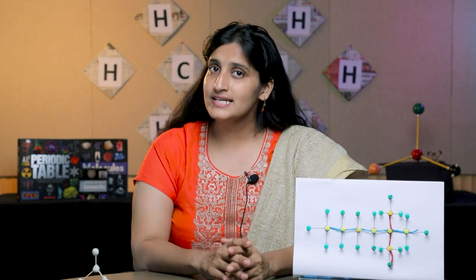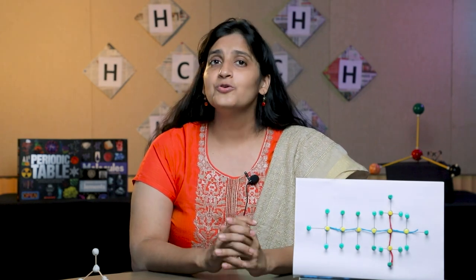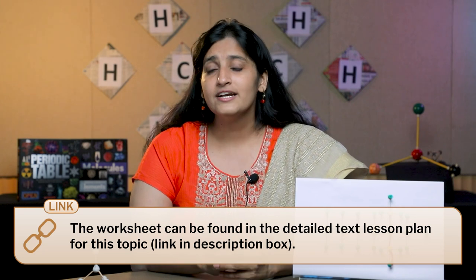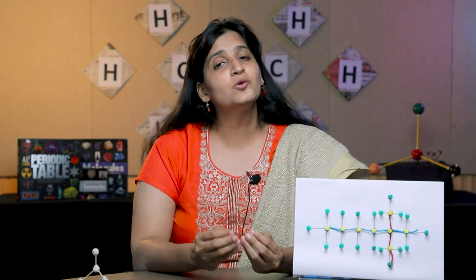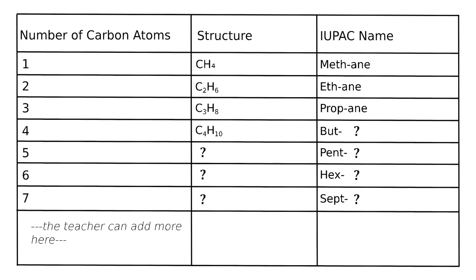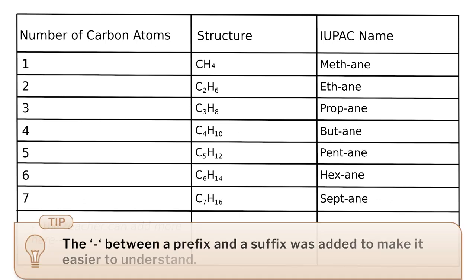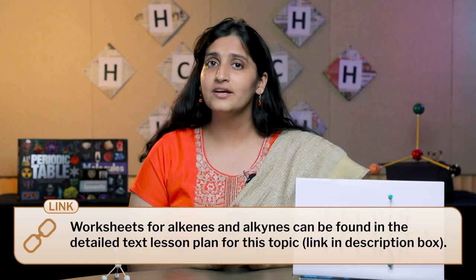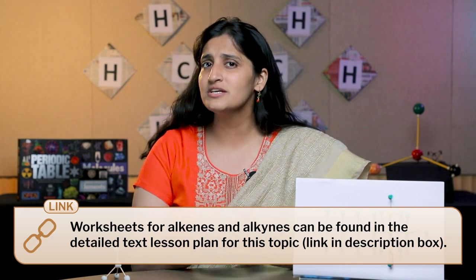We then began to understand these set of rules with the help of a worksheet. You can find the link to this worksheet in the description box below. We divided the students into groups and asked each group to work on the worksheet together. In this worksheet, we have filled the chemical formula and IUPAC name for methane, ethane and propane. Now, students have to figure out the rules that are already set. If they are able to fill in the rest of the sheet, they have understood the suffix rule and the general chemical formula for alkanes. Similar worksheets for alkenes and alkynes can be found in the description box below and also can be solved in class.